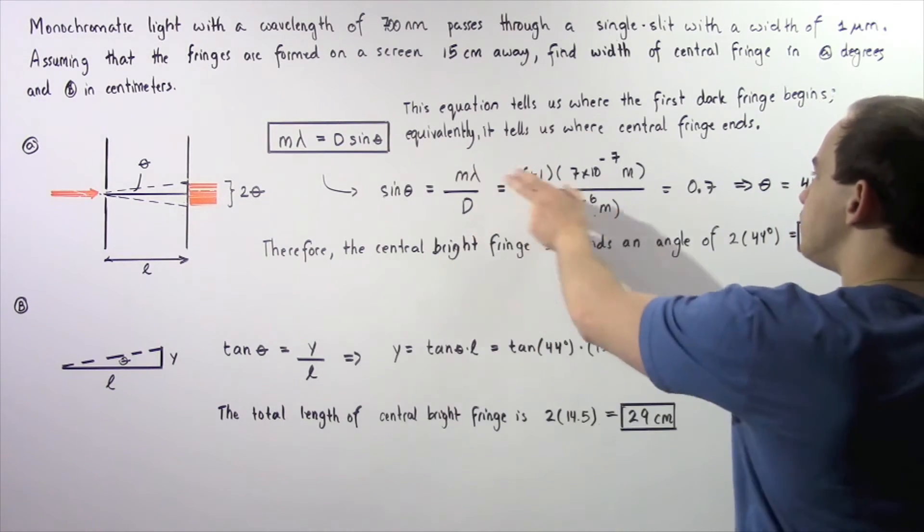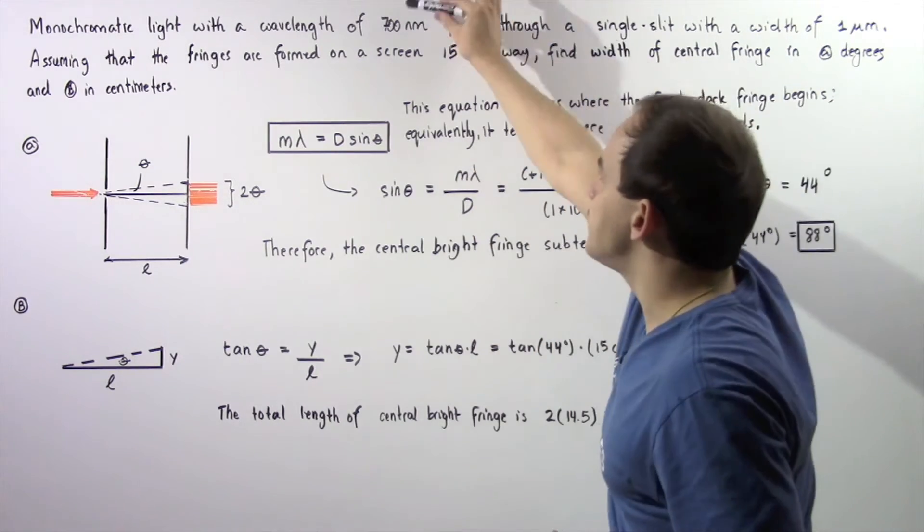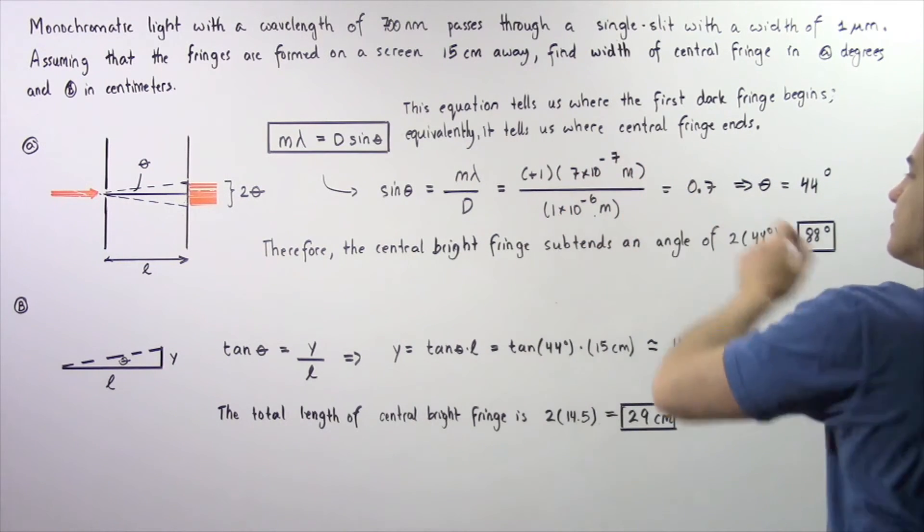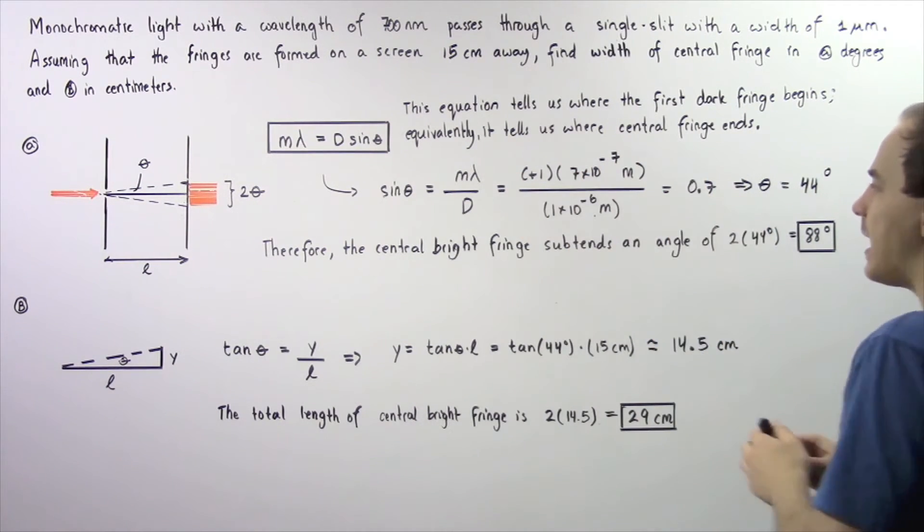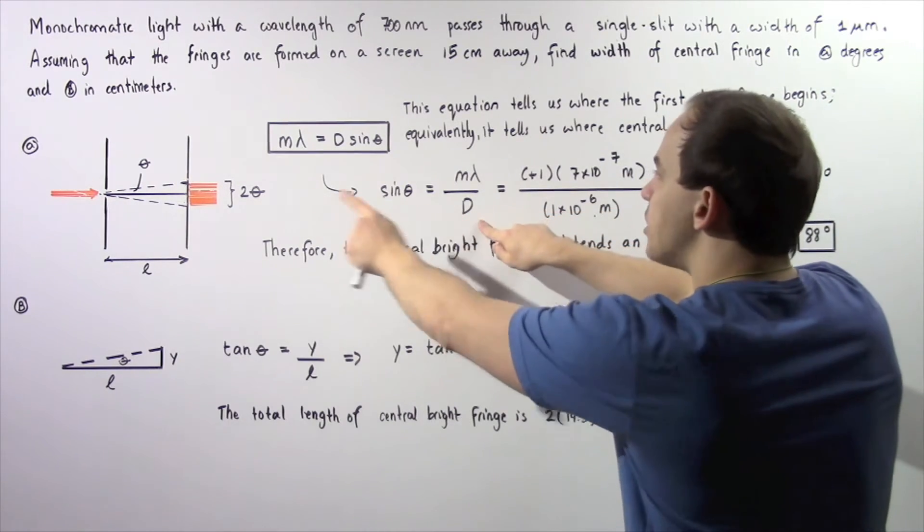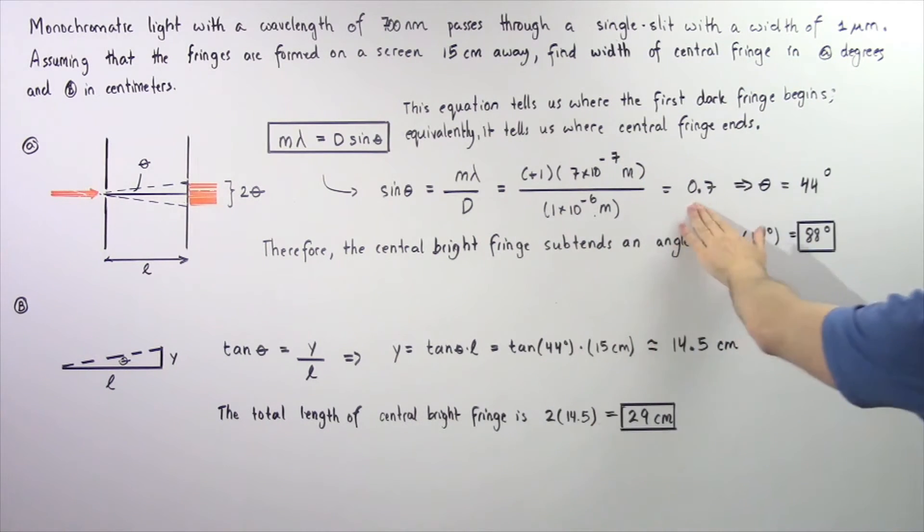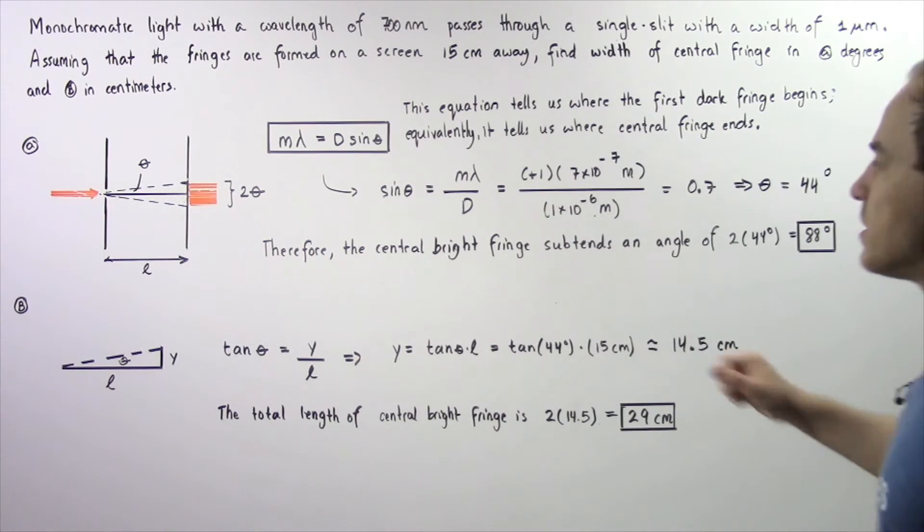We want to calculate that line that separates our bright fringe from the first dark fringe. So m is positive one, multiplied by lambda 700 nanometers or equivalently seven times 10 to negative seven meters, divided by our width of the slit one micrometer or equivalently one times 10 to negative six meters. We divide and we get 0.7.